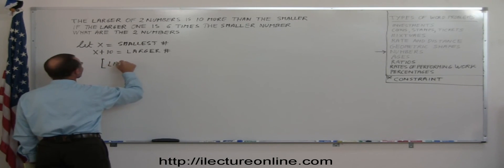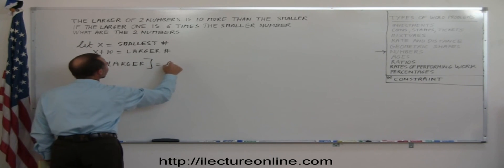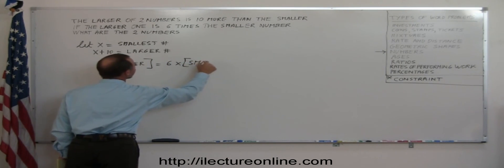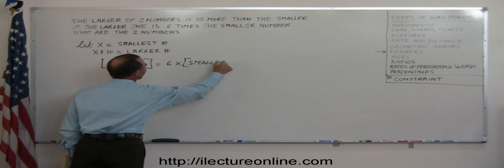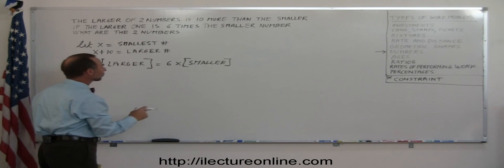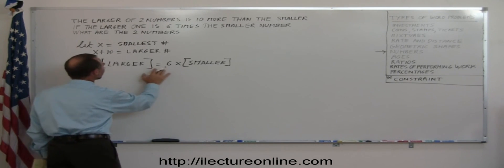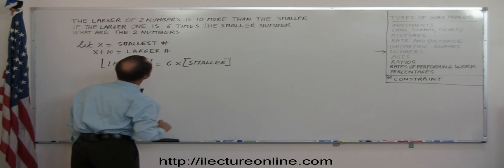The larger is equal to six times the smaller number. Kind of paraphrasing what the sentence actually says in English, just putting it more into a mathematical equation. So the larger number is six times the smaller number. We call that the constraint.